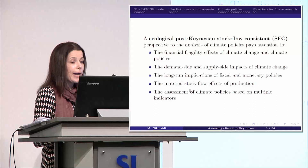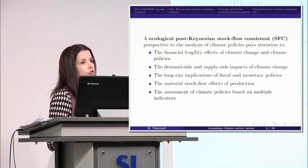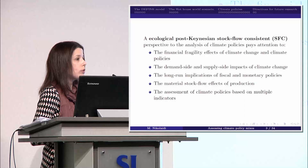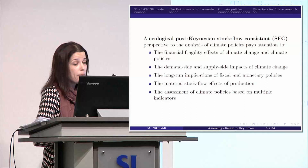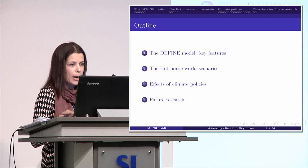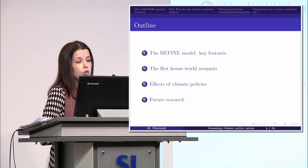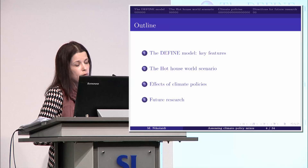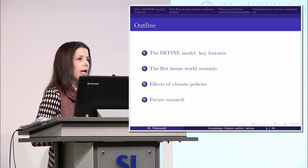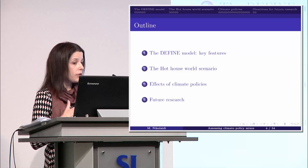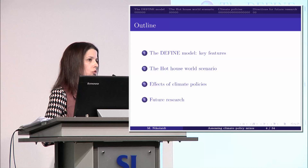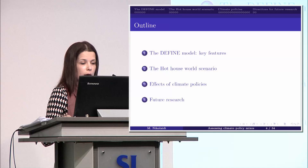In order to evaluate these policies, we need to rely on various indicators that focus not only on the macroeconomy, but also take into account social aspects, the financial performance of firms and banks, and of course ecological indicators. I will use a specific model that I have co-developed. I'm going to explain the key characteristics of this model, then show you the baseline scenario in line with the hothouse world scenario, and then focus on the effects of individual policies and policy mixes. At the end, I will mention some areas for future research.